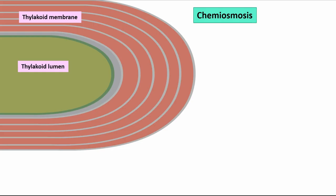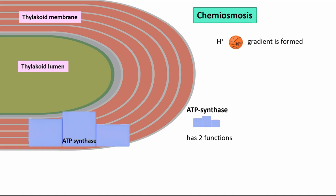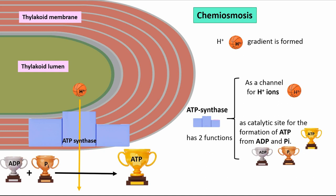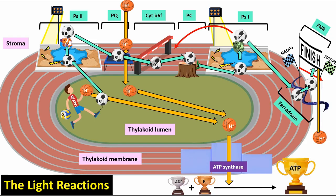Chemiosmosis. A proton gradient is formed. There is ATP synthase, which has two functions: as a channel for proton ions, and as a catalytic site for the formation of ATP from ADP and phosphate. You can see here all the steps of the light reactions together.